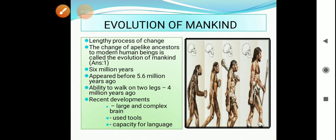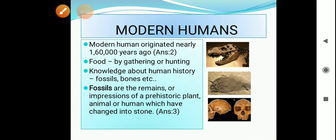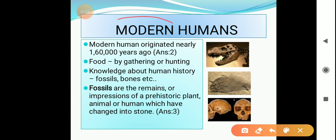Now let us see something about modern human beings. Modern humans originated nearly 160,000 years ago. During this long period of human history, human beings got food by either gathering plant produce or hunting. That means during this time, human beings started to collect food.